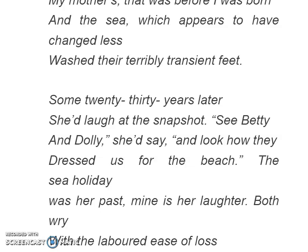The sea holiday was her past; mine is her laughter — both rife with the labored ease of loss. Here, both these pasts — the sea holiday, as well as the laughter of her mother — are remembered with a difficult yet easy sense of loss. These are the two things the poet remembers from the past. The sea holiday was a past thing for her mother, and the smile she sees in the picture is a thing of the past for the narrator — the poet.